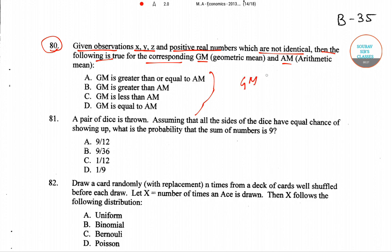We always know arithmetic mean is greater than GM, equals to HM, greater than HM. We have to remember this: arithmetic mean is greater than GM, which is less than AM. So given our observation x to z positive real numbers which are not identical, then for corresponding GM and AM, GM is less than AM. So we have solved question number 80.